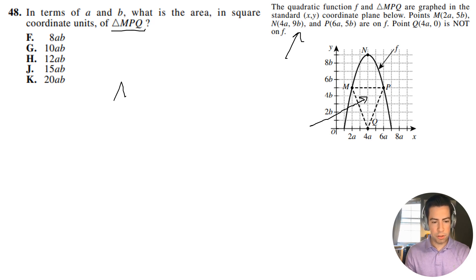Remember that the area of a triangle is going to be one-half base times height, which equals base times height divided by 2. So let's figure out what the base is. The base is going to be from this point to this point, 6A to 2A. So I'm going to have 6A minus 2A, and then I'm going to multiply that by the height, which is going to be 5B, and divide it by 2.